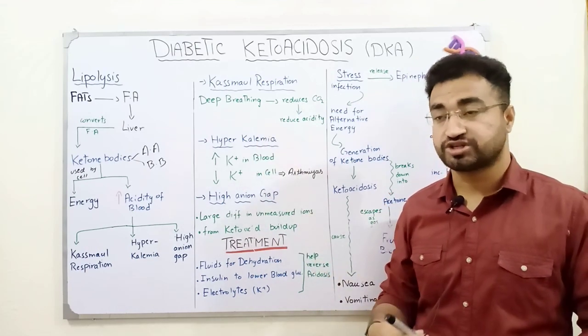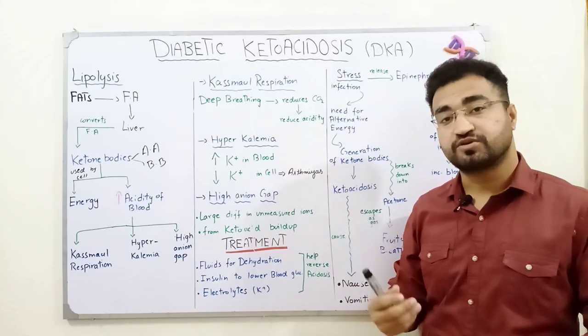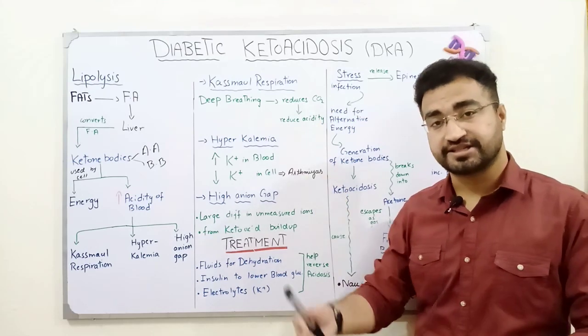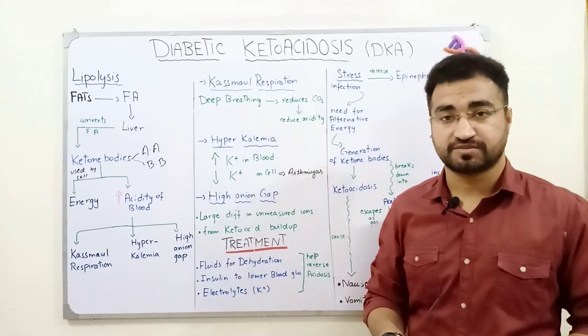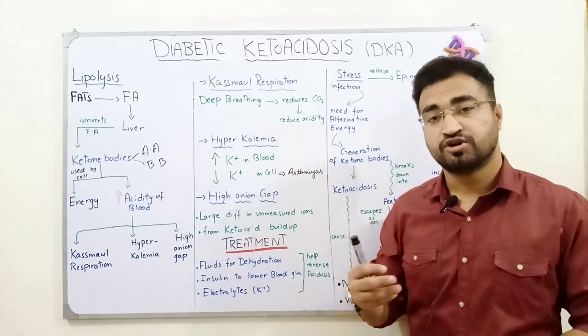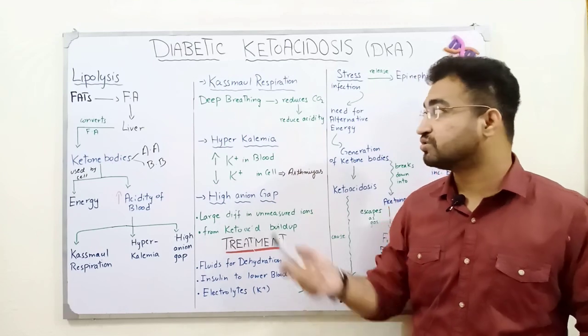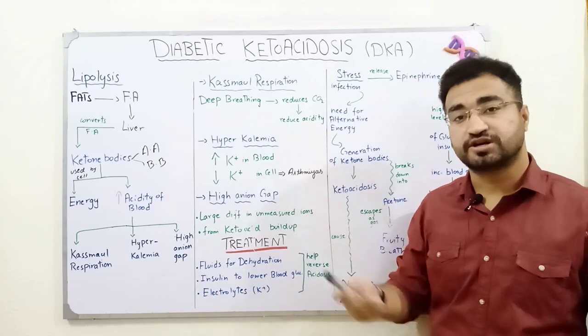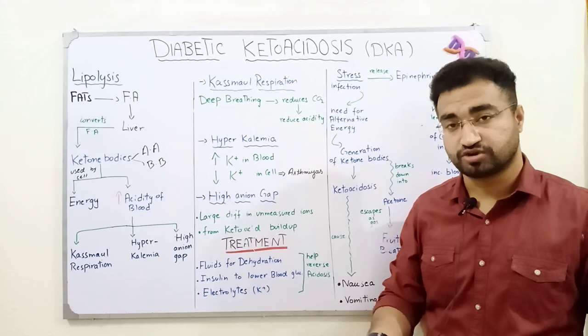Through breathing, the body attempts to release carbon dioxide so that carbonic acid is not produced, thereby preventing further increase in acidity. In this way, the body tries to reduce the acidity through respiratory compensation.